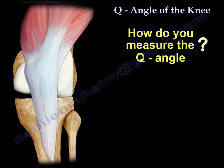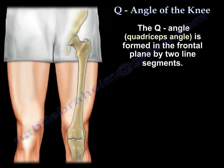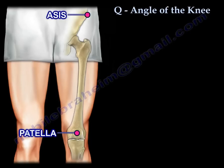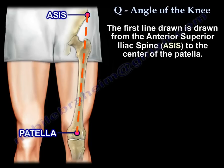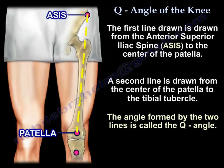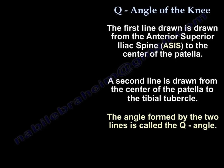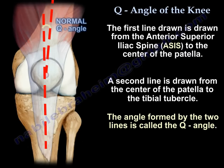How do you measure the Q-Angle? The Q-Angle, or quadriceps angle, is formed in the frontal plane by two line segments. The first line is drawn from the anterior superior iliac spine (ASIS) to the center of the patella. A second line is drawn from the center of the patella to the tibial tubercle. The angle formed by the two lines is called the Q-Angle.